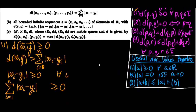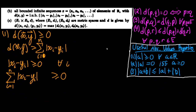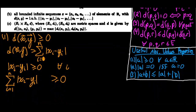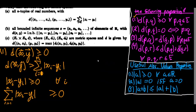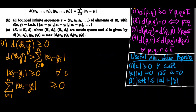Now we need to prove property 2, which states that the distance between p and q equals zero if and only if p equals q, for all p and q in the set on which the metric is defined. We need to prove both directions: if the distance between p and q is zero then p equals q, and if p equals q then the distance between p and q is zero.